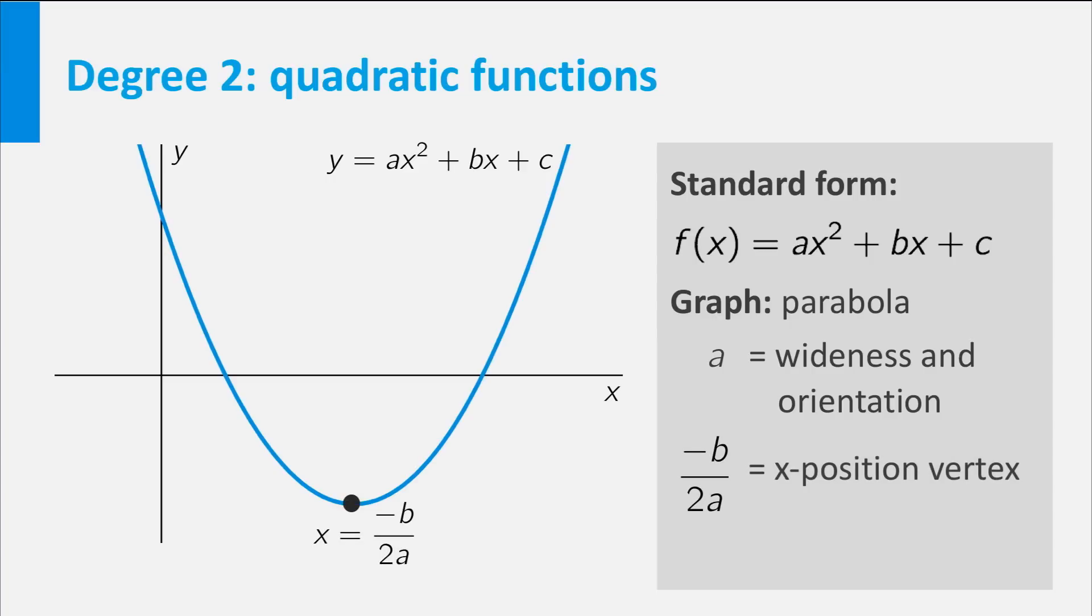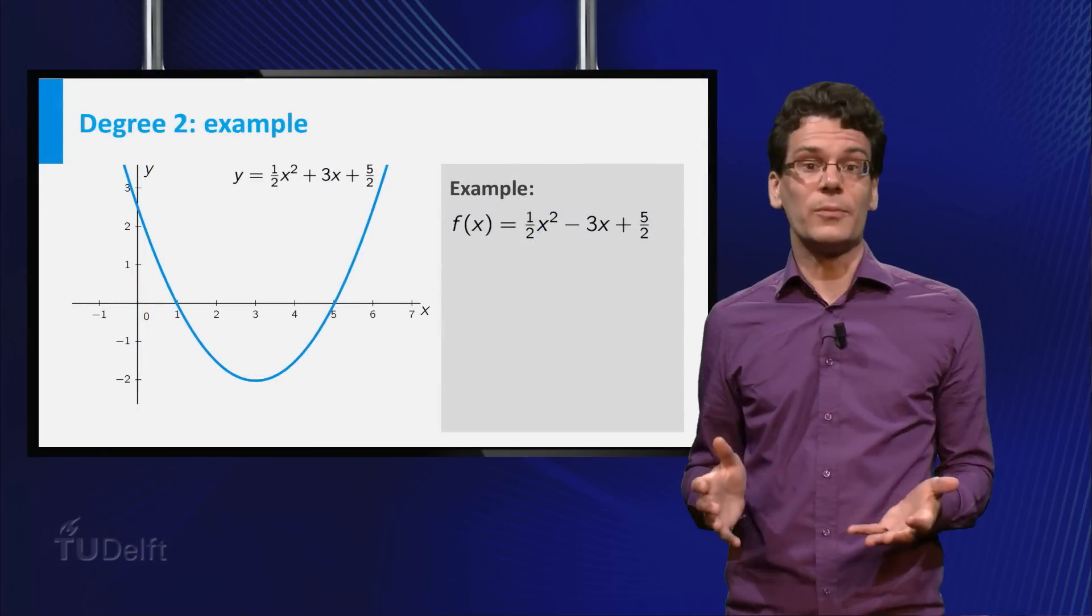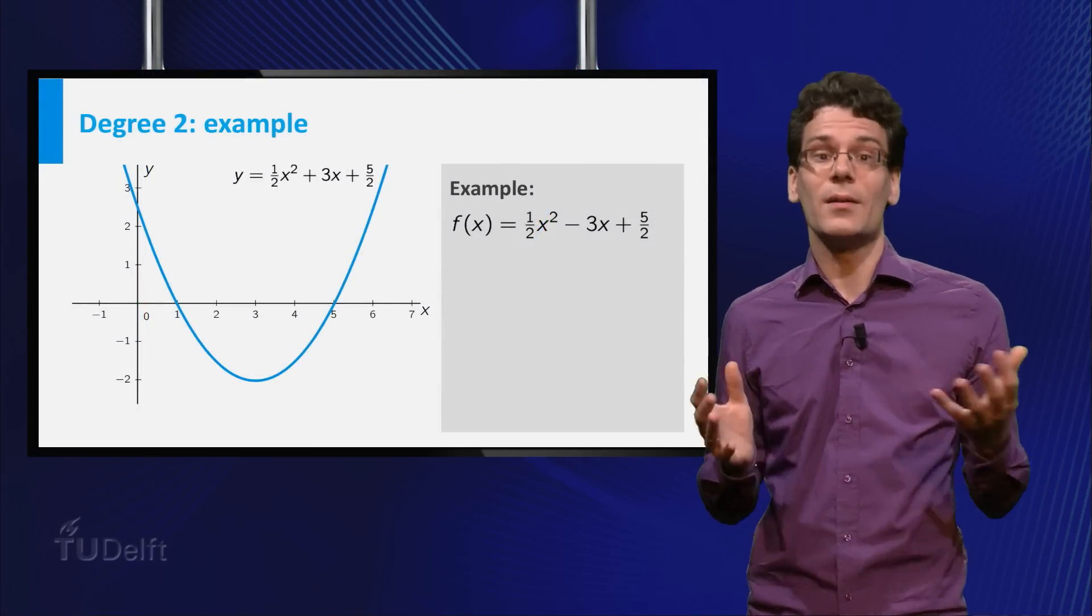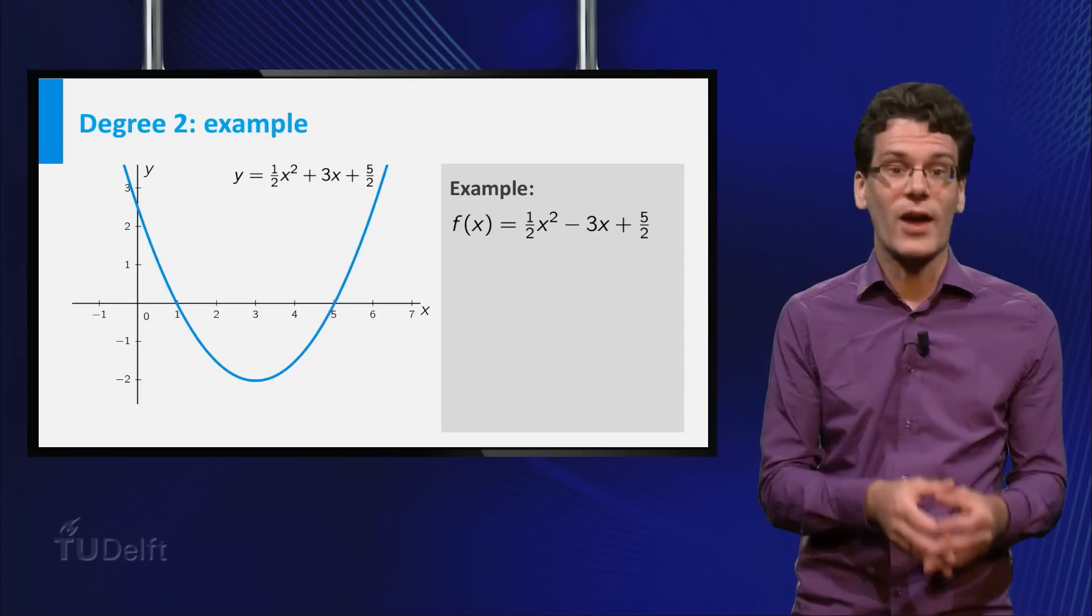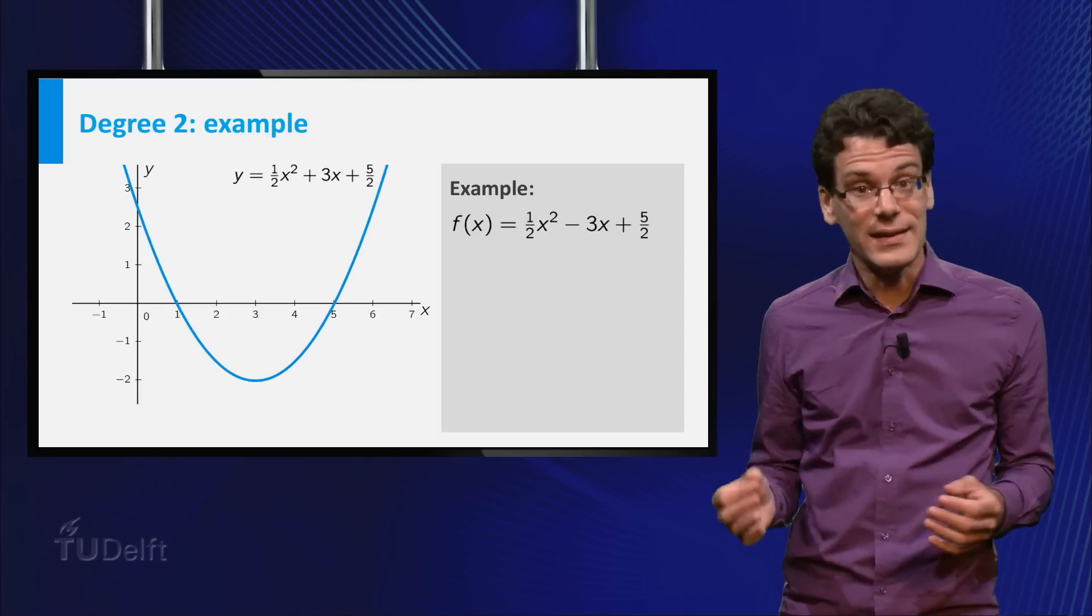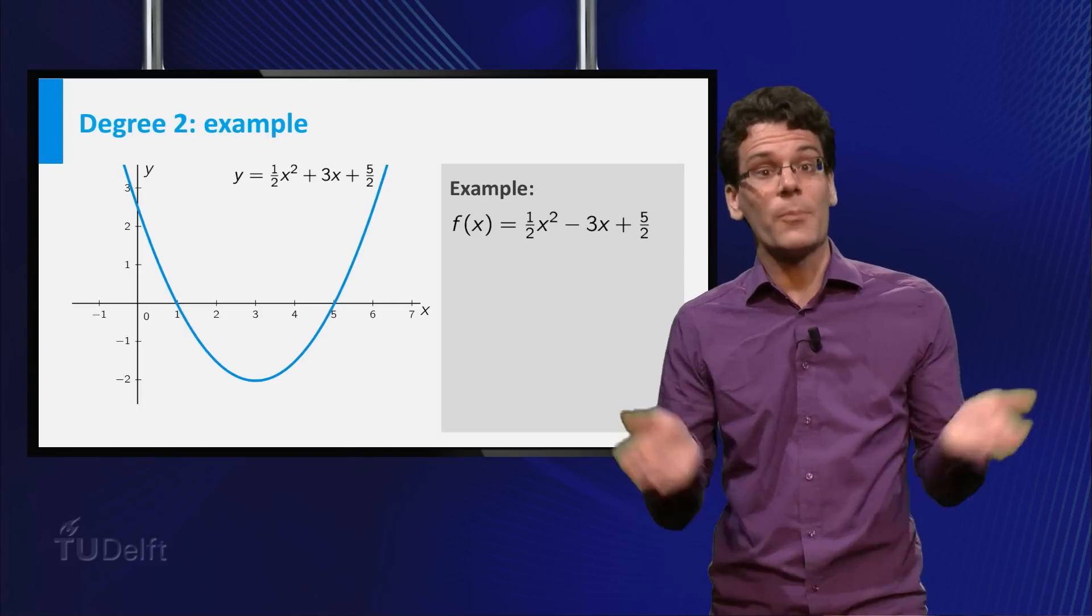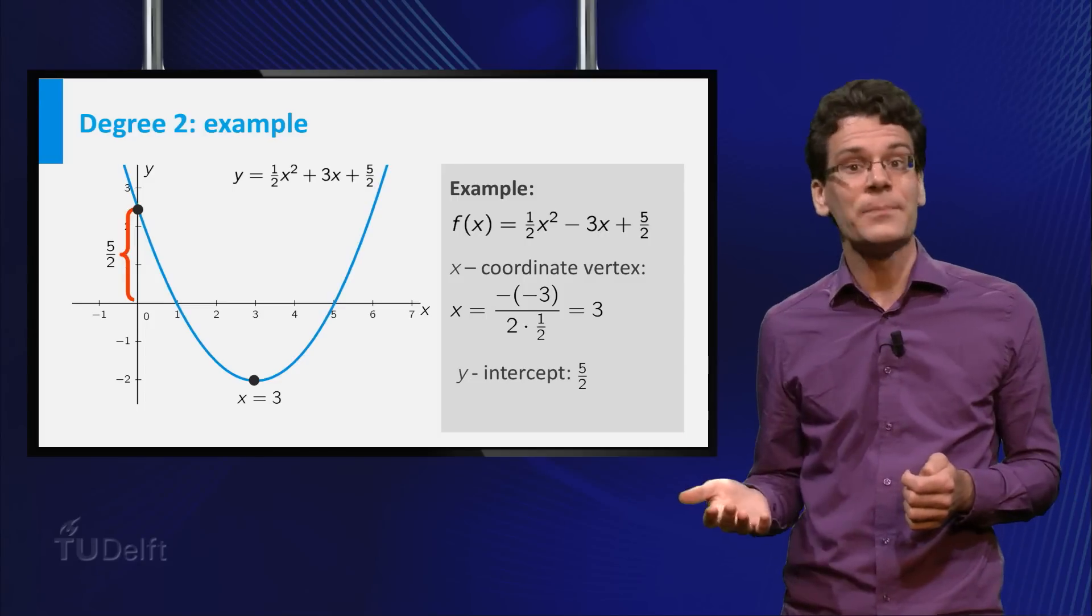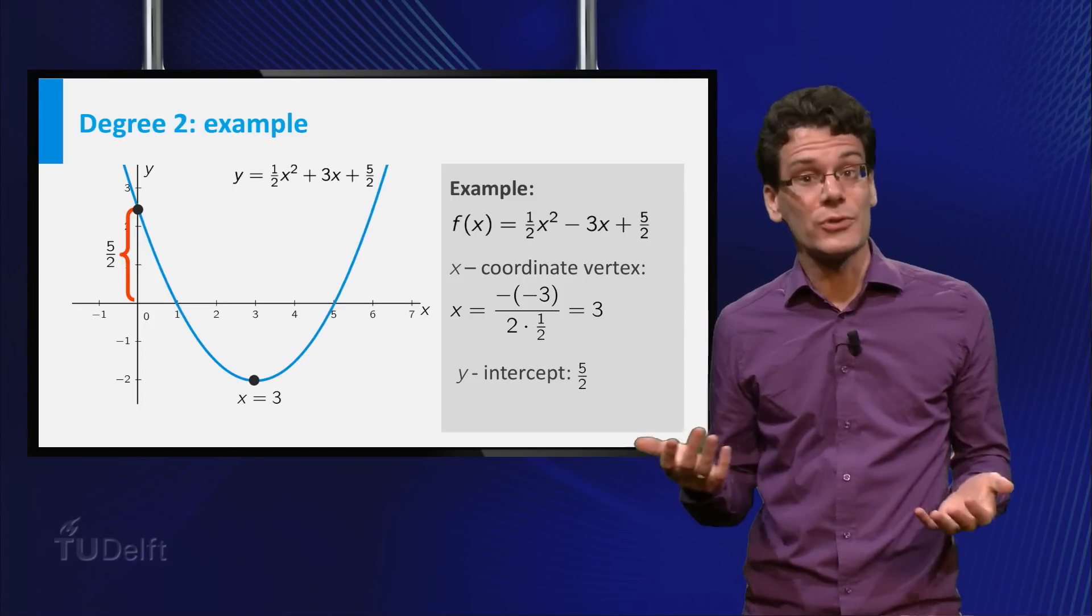Furthermore, the x-coordinate of the vertex of the parabola is located at x equals minus b divided by 2a. And finally, c gives the y-intercept of the graph. Let me show you an example, f(x) equals 1/2 times x squared minus 3 times x plus 5/2. Indeed, you see that the graph opens upward, the x-coordinate of the vertex equals minus b over 2a, and the y-intercept equals the constant term.